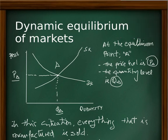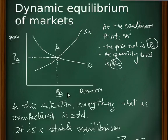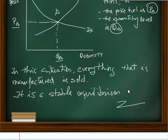When we talk about the dynamic equilibrium of markets, we have to think about point A, the equilibrium. This equilibrium price level is PA and quantity is QA. In this situation, everything that is manufactured is sold. It is an equilibrium.